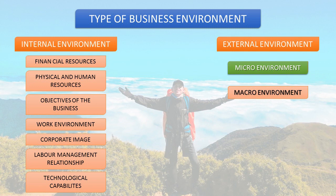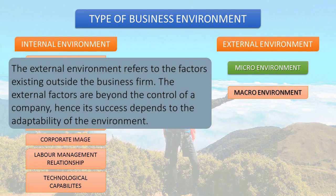The second type of business environment is external environment. The external environment refers to the factors existing outside the business firm. External factors are beyond the control of a company, and hence its success depends on the adaptability to the environment.